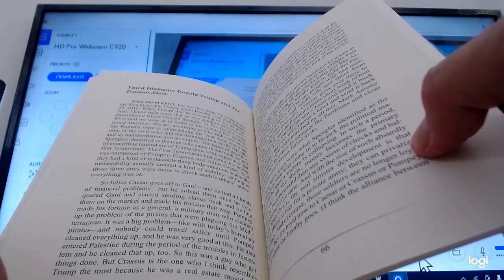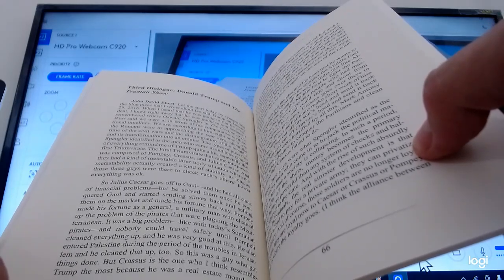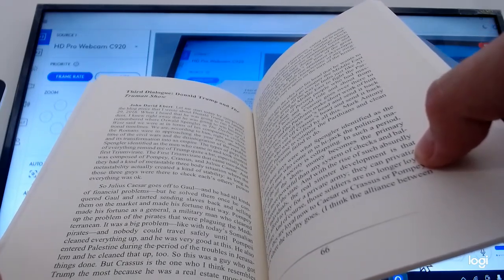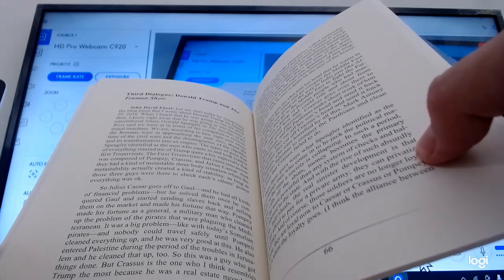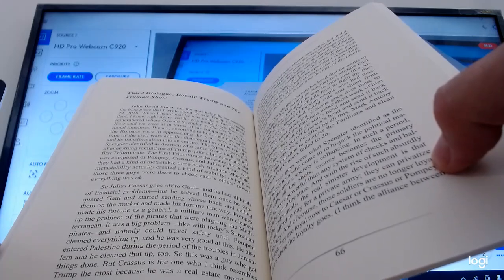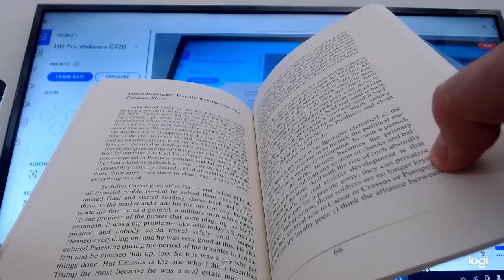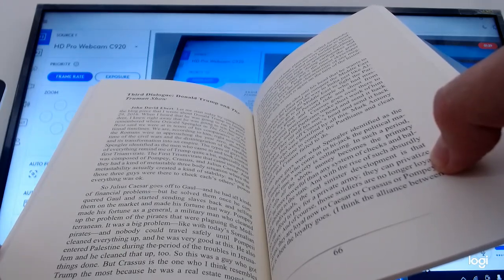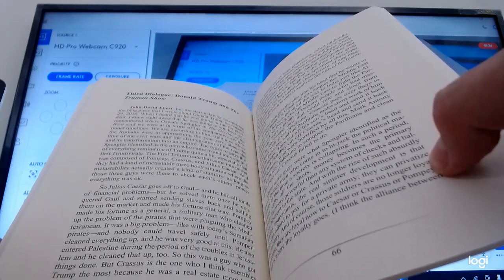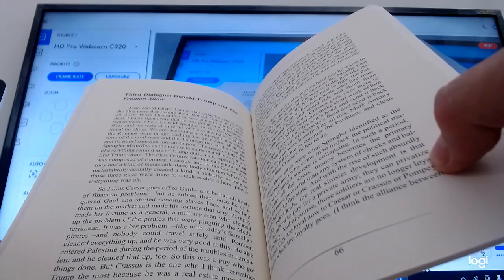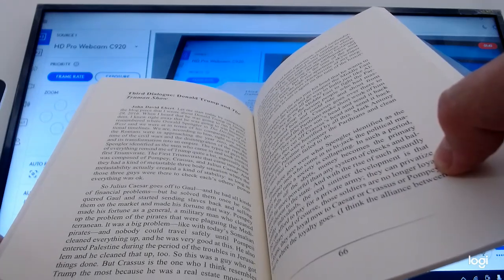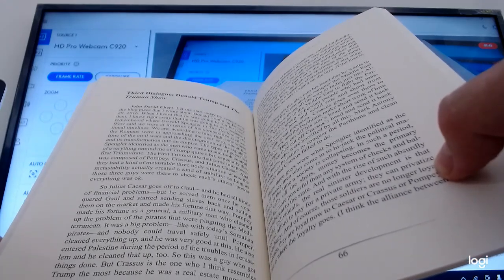The types of guys that Spengler identified as the men who came in and took control of everything remind me of Trump quite a bit, especially that first triumvirate. The first triumvirate was composed of Pompey, Crassus, and Julius Caesar. They had a kind of metastable three-body situation where as long as those three guys were there to check each other's power, everything was okay. Pompey made his fortune as a general, a military man who cleaned up the problem of the pirates plaguing the Mediterranean and also entered Palestine during the Troubles in Jerusalem.